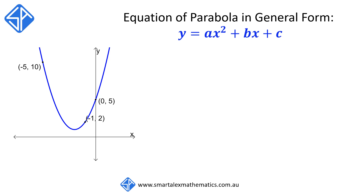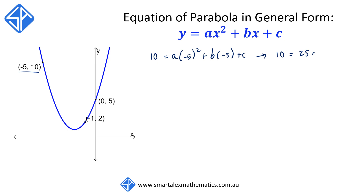For example, we're going to first take the coordinate negative 5, 10, and substitute this into the general form so that we get 10 is equal to a times negative 5 squared plus b times negative 5 plus c. This will give us our first equation, which is 10 is equal to 25a minus 5b plus c.